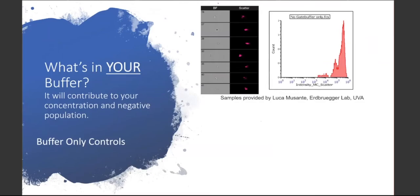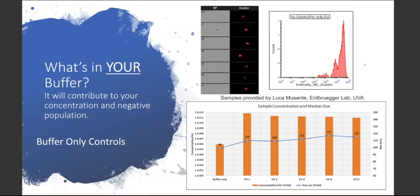The first thing we're going to talk about are buffer controls. What's in your buffer? Even after filtering buffers, you're still going to get some scattering of events that will end up in your data file. Generally, if they're very large, they'll have a very high scatter and these are easy to gate out — larger particles are not as much of a problem as the small ones. However, we recently did some sizing across several samples as well as the buffer, and you can see that the events showing up in the buffer are certainly within the size range of what we expect for a lot of our EVs.